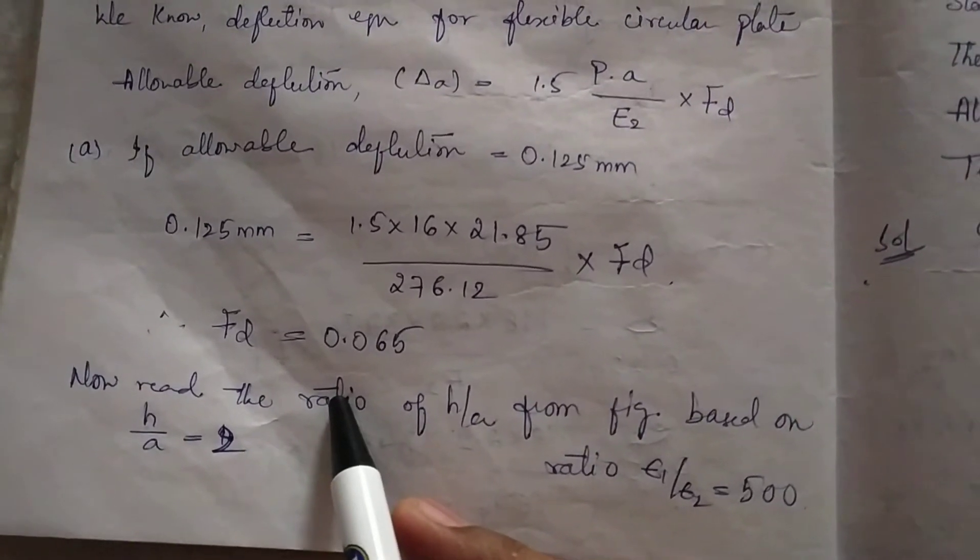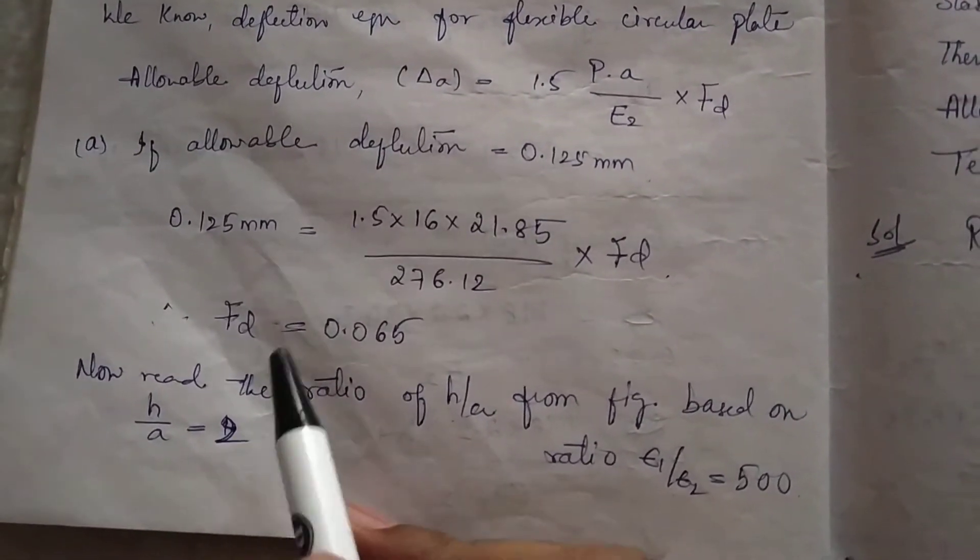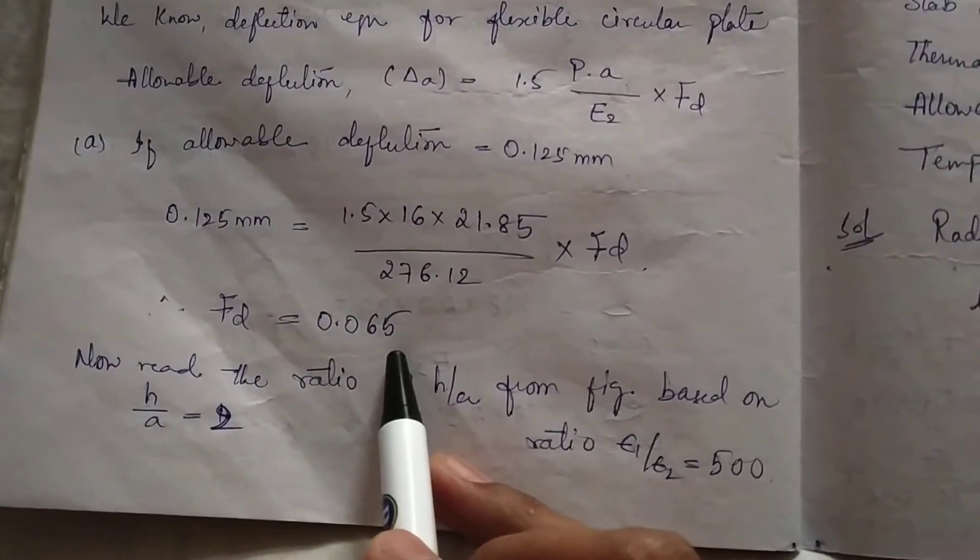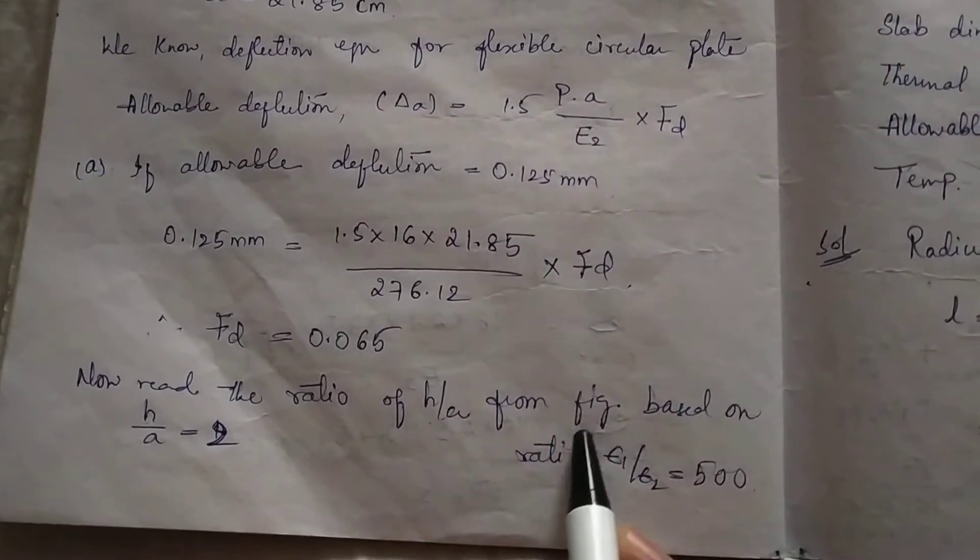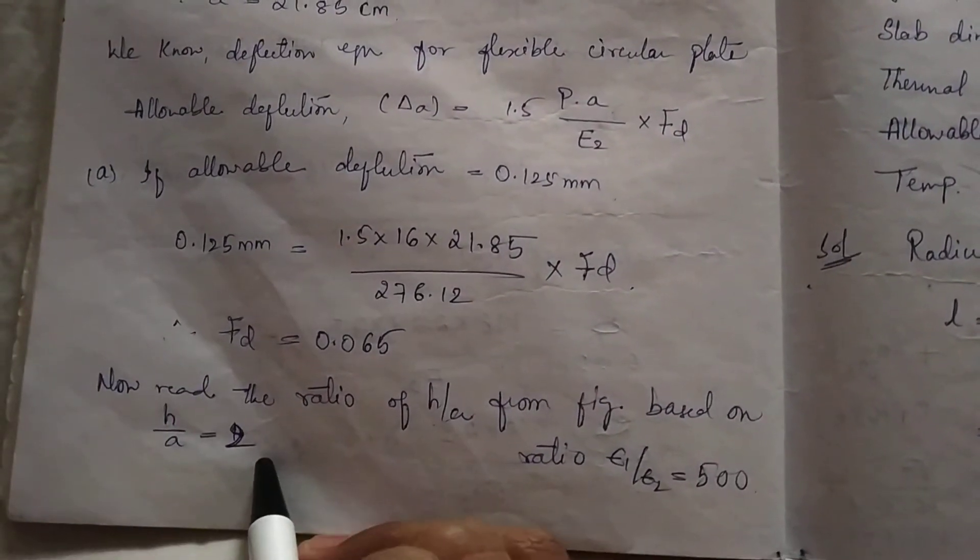Same as I have shown earlier for base course or granular layer, how we calculated. Same here we have to do. Ft equals this much, I am getting 0.065. And read the H by A from the figure as 2.